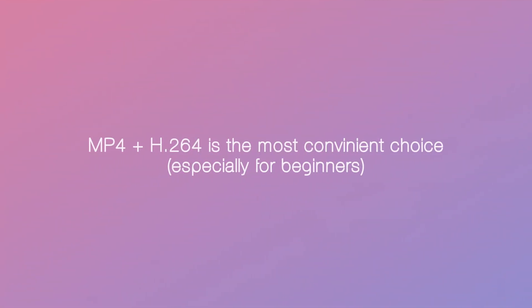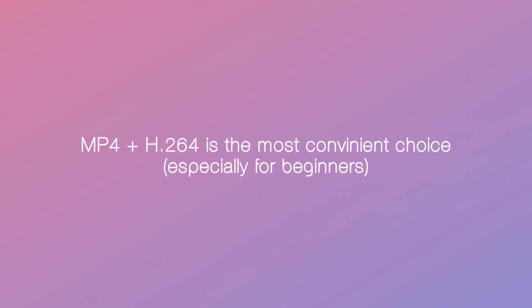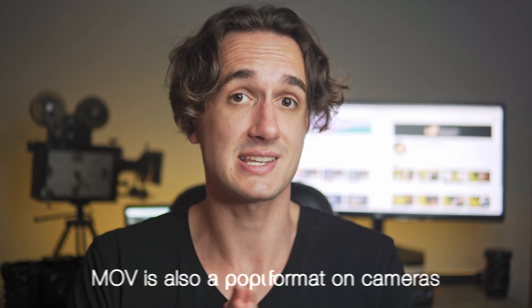First of all, let's talk about recording formats. Most entry-level cameras record in MP4, which is perfect for starting out, especially if the codec is H.264. It's a very versatile format that is compatible with everything, so if you have the option to choose MP4, I'd suggest you choose that. However, some cameras that you might start out making films and videos with will record in other kinds of formats, such as MOV.